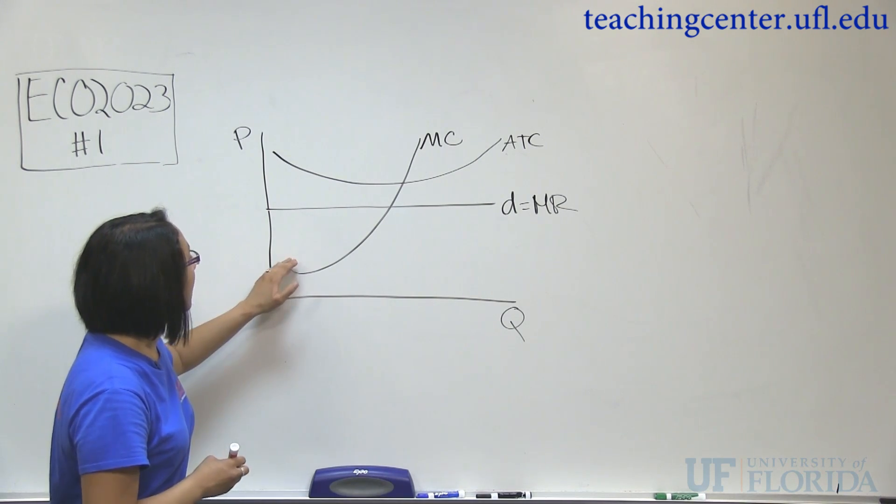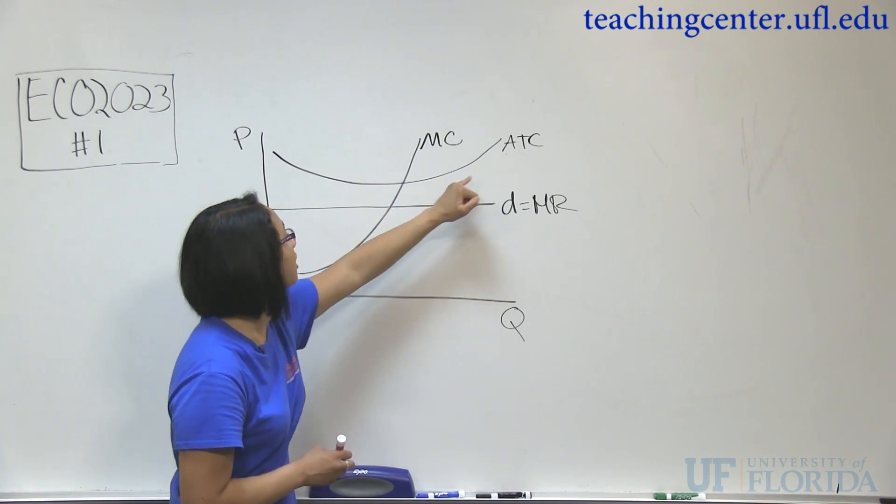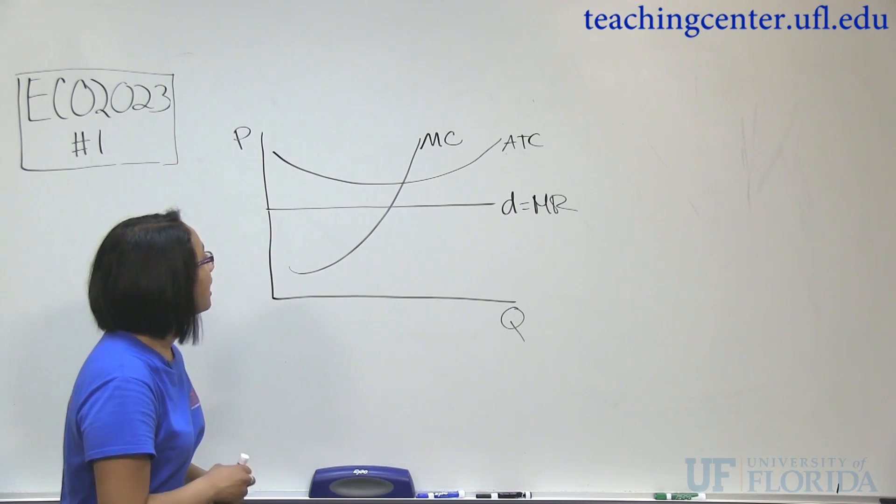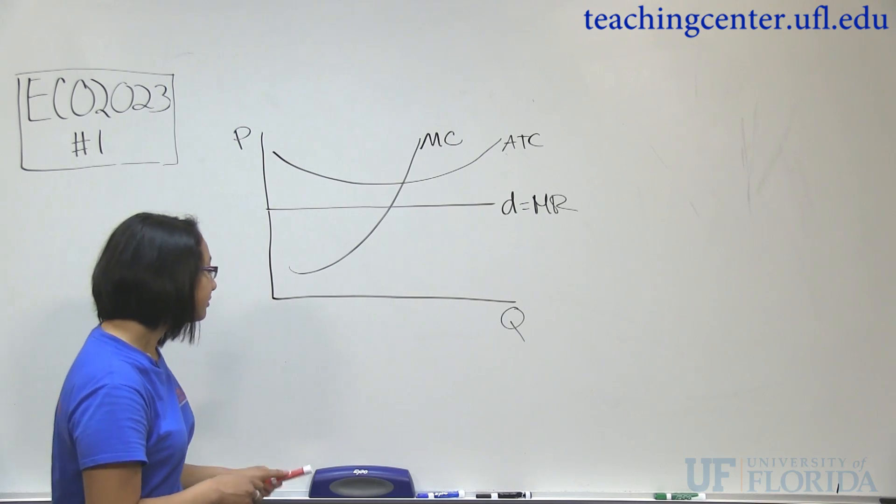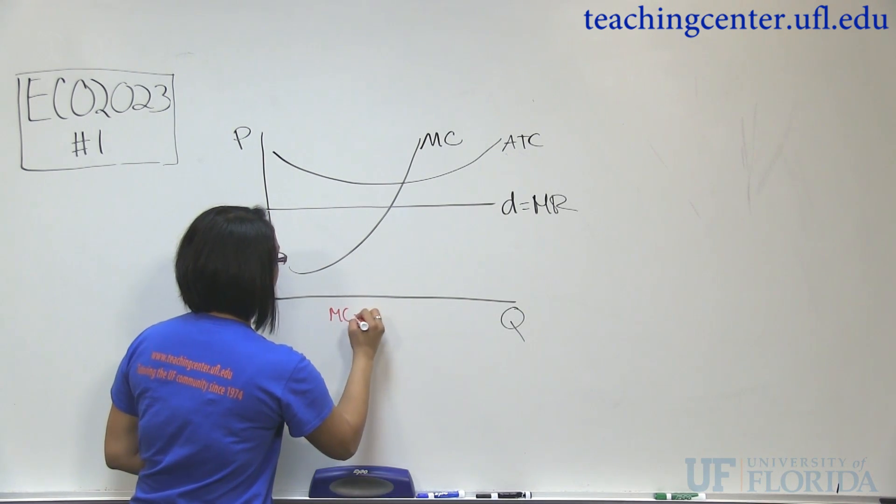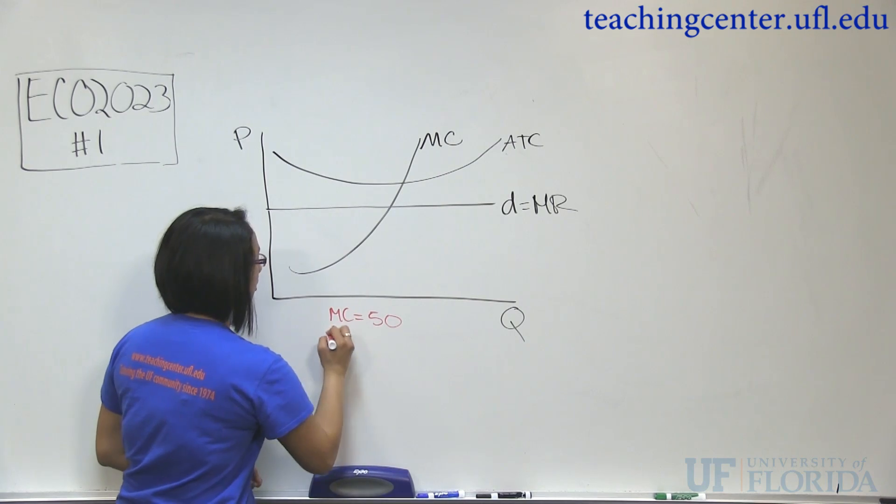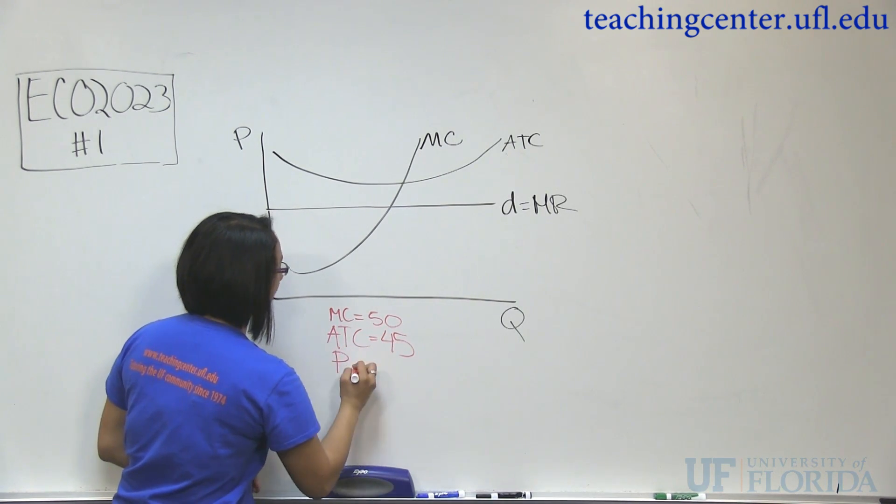So we still have marginal cost is somewhat increasing, and average total cost is this curve here. And average total cost can be greater than or below our demand curve. So here they gave us that marginal cost was 50, average total cost is 45, and then our price is 40.